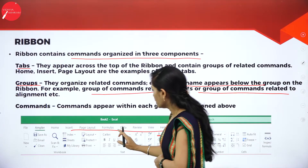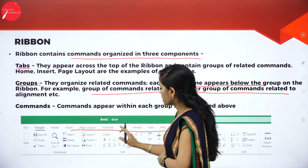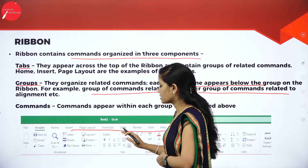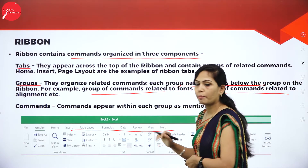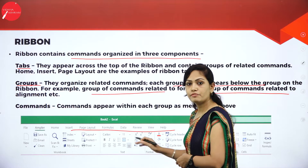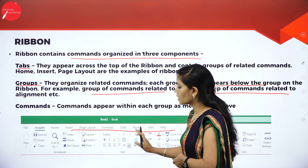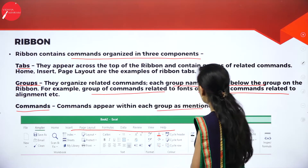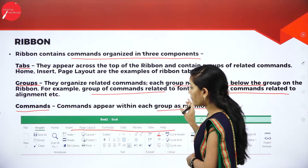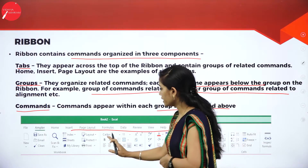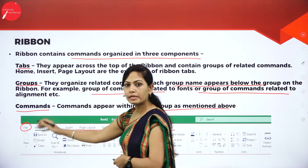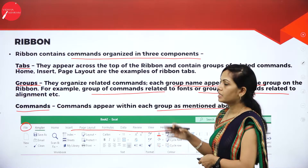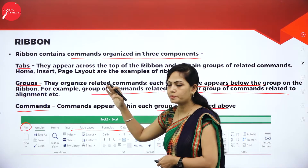You can observe here — we have a formatting toolbar related to fonts and alignment. For changing font size, colors, and all, you can use this formatting toolbar, as well as the alignment option. This is called Groups. Next, Commands appear within each group. If you click on the File menu, you will get many commands. This is called Tabs, Groups, and Commands.